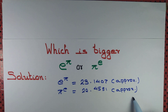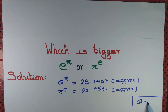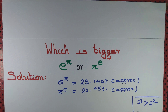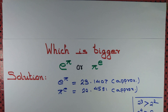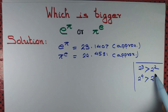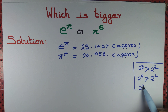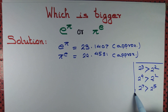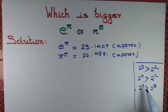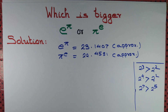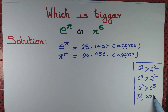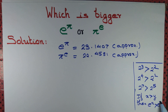We observe that 2 cubed is greater than 2 squared, 2 to the power 4 is also greater than 2 squared, and 2 to the power 7 is greater than 2 to the power 5. What I mean to say is that if we take a higher power, the number we get is also higher. This is also true for the exponential function: if x is greater than y, then e to the power x is greater than e to the power y.